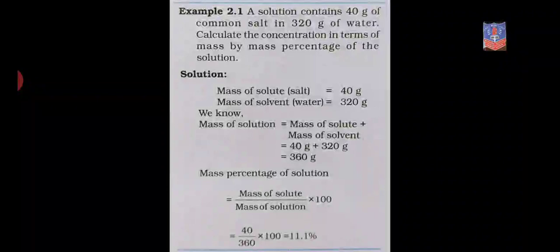The total mass of the solution is 40 plus 320 equals 360 grams, because solute plus solvent gives solution. The question asks to calculate the concentration in terms of mass by mass percentage. The formula is: mass of solute upon mass of solution into 100.